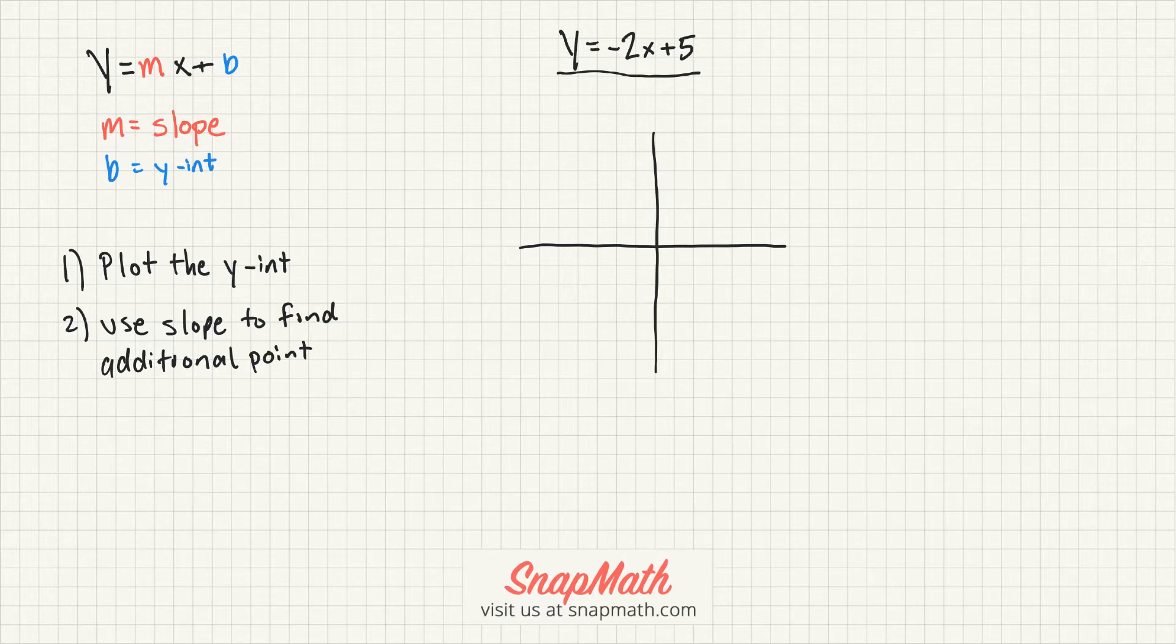So what I wrote over here in the top left is the slope-intercept form, where m is the slope and b is the y-intercept.